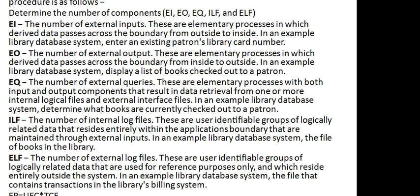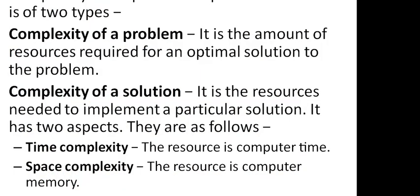The functional point is calculated based on UFC multiplied by TCF, with these five components calculated using UFC plus TCF. Complexity is the third basic component of the internal size attributes of software measurement. It consists of two parts: complexity measured of a problem, meaning the amount of resources required for an optimal solution, and complexity of the solution, meaning the resources needed to implement a particular solution. It has two aspects: time complexity, which requires computer time resources, and space complexity, which requires computer memory.